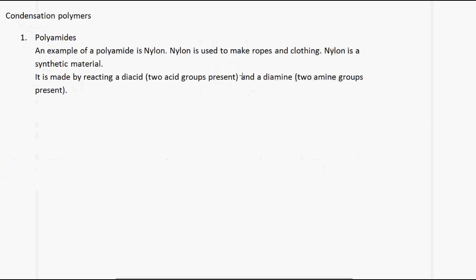The next type of polymerization is condensation polymerization. In this type, small molecules such as H₂O and HCl are eliminated. The first example we are going to look at is polyamides. An example of a polyamide is nylon, which is used to make ropes and clothing. Nylon is a synthetic material.